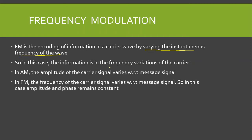In FM, the information is in the frequency variations of the carrier. In amplitude modulation, the information was in the amplitude variations of the carrier. In AM, the amplitude of the carrier wave was varied with respect to the message signal. In FM, the frequency of the carrier wave is varied in accordance with the message signal — specifically, in accordance with the amplitude of the message signal — whereas the amplitude and phase remain constant.